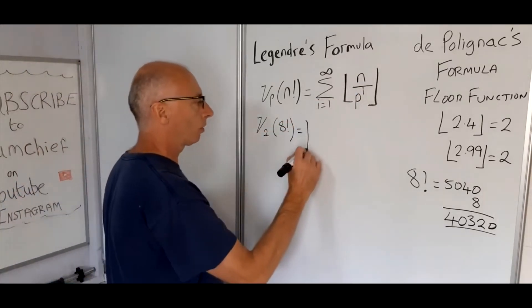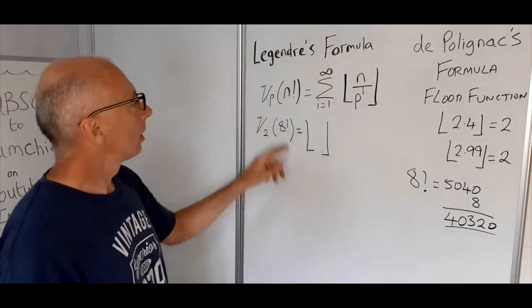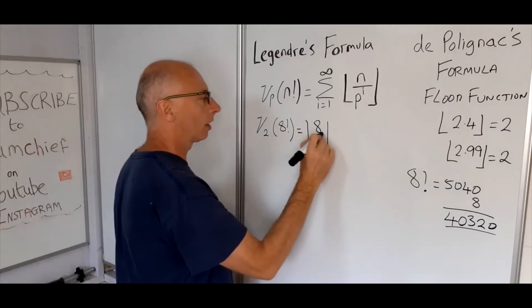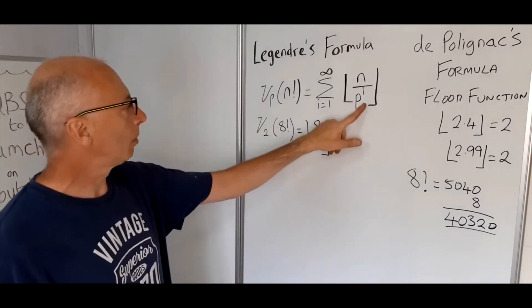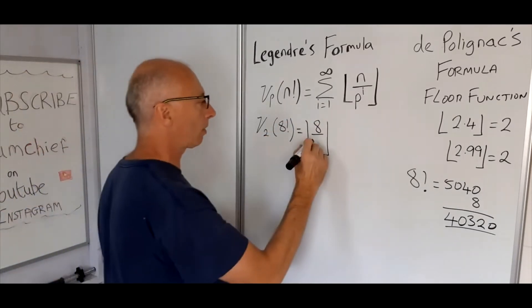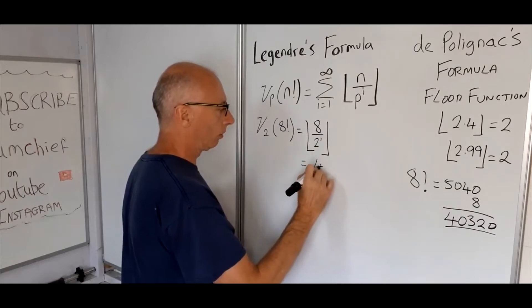Now we're going to sum all the factorials of p to the power of i. So take the floor function of n, so n in this case is 8, divide that by the prime number, so our prime number is 2, and i is 1, so 2 to the power of 1. So that will equal 4.